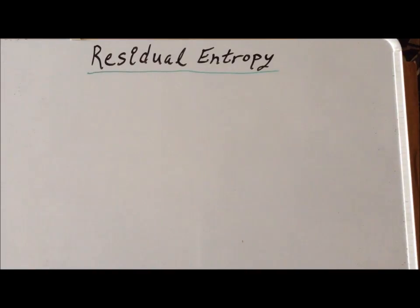Hello. In this video, we are going to calculate the residual entropy, the entropy left at absolute zero, of carbon monoxide. And we're going to use the Boltzmann relationship to do this.